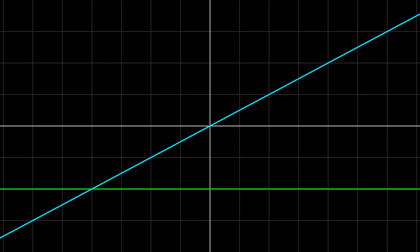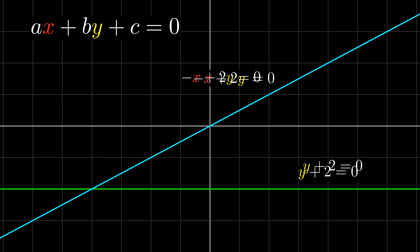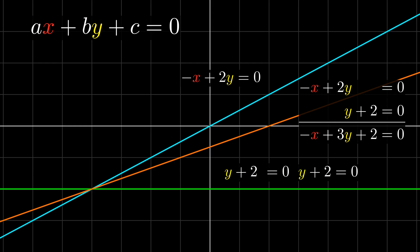Consider lines in two-dimensional space. We can represent lines in two-dimensional space with an equation that looks like this. For example, the horizontal line is represented by the equation y plus 2 equals 0, and the slanted line is represented by the equation minus x plus 2y equals 0. With these equations, we can define addition and scalar multiplication of lines. We can add two lines by adding the equations, which gives us a new line. We can scale a line by multiplying the equation by a scalar.